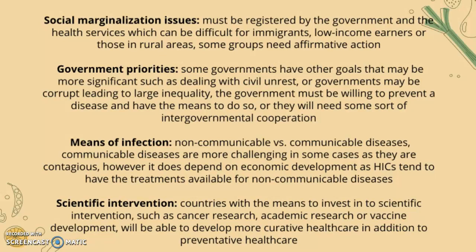On government priorities, some governments have other goals that may be more significant, such as dealing with civil unrest, or they may be corrupt, leading to large inequality. The government must be willing to prevent disease and have the means to do so, or they may need intergovernmental or international cooperation — for example, many countries in sub-Saharan Africa dealing with malaria rely on non-governmental involvement.